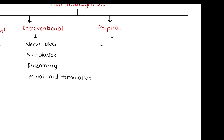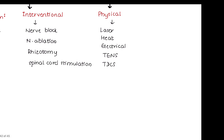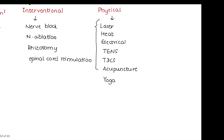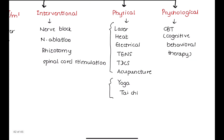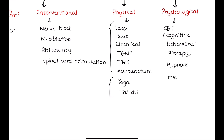Physical methods like heat, laser therapy, or electrical therapies are another option for pain management. Electrical therapies like transcutaneous electric nerve stimulation (TENS) and transcranial direct current stimulation are emerging treatment methods. Physical exercises like yoga and tai chi are also effective at reducing pain. Patients may also benefit from psychosocial interventions like cognitive behavioral therapy, which focuses on treating thoughts, beliefs, attitudes, and behaviors related to pain. Other therapies like hypnosis, meditation, and breathing exercises might also help reduce pain.